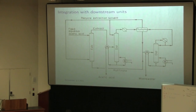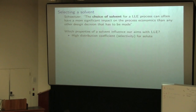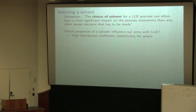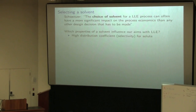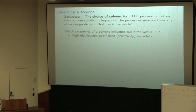Given this context of what these units look like — mixers, settlers, trays, columns — and understanding what is upstream and downstream of liquid-liquid extraction, I'd like you to take two or three minutes and discuss with the person next to you: what are good properties of the solvents? This is the hardest part of designing a liquid-liquid extraction. The choice of solvents can often have a more significant impact on process economics than any other design decision. A bad decision on solvent choice will always cost you more in the long run, because this is a species that has to be replaced from time to time.